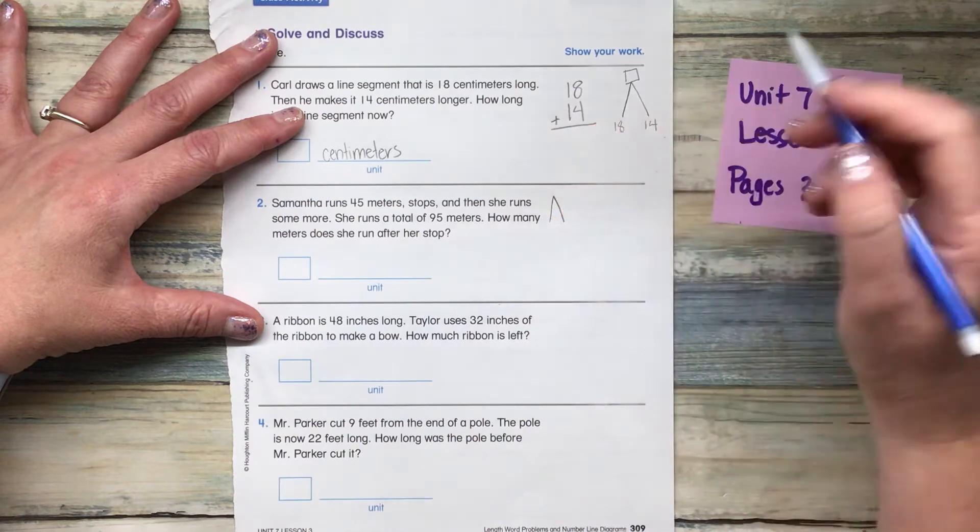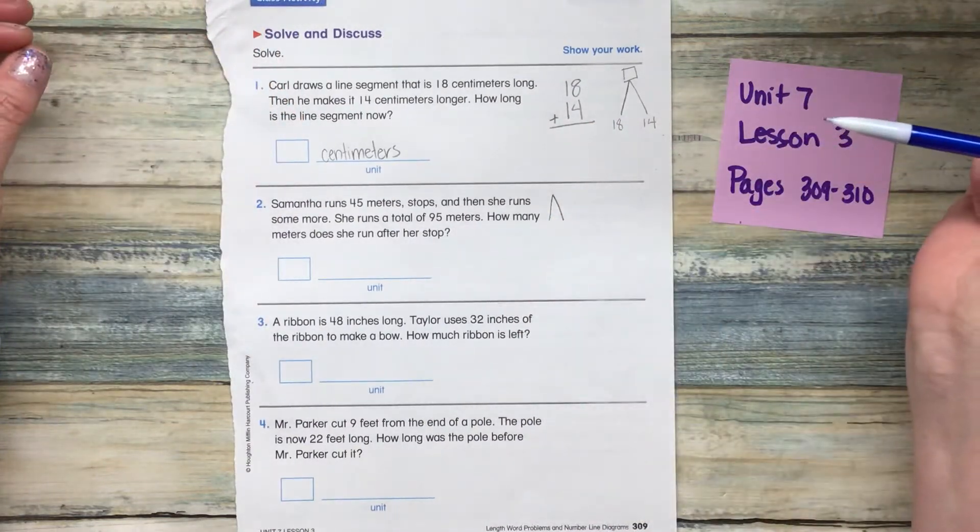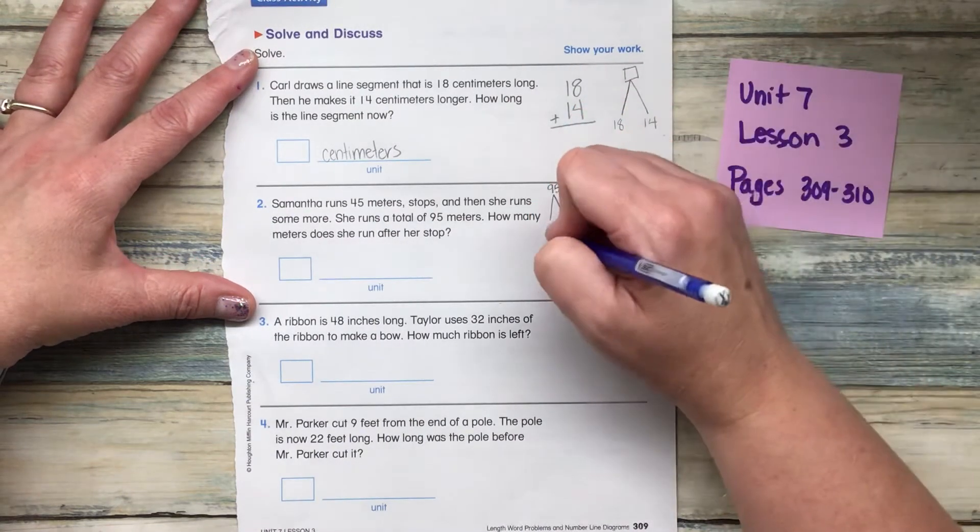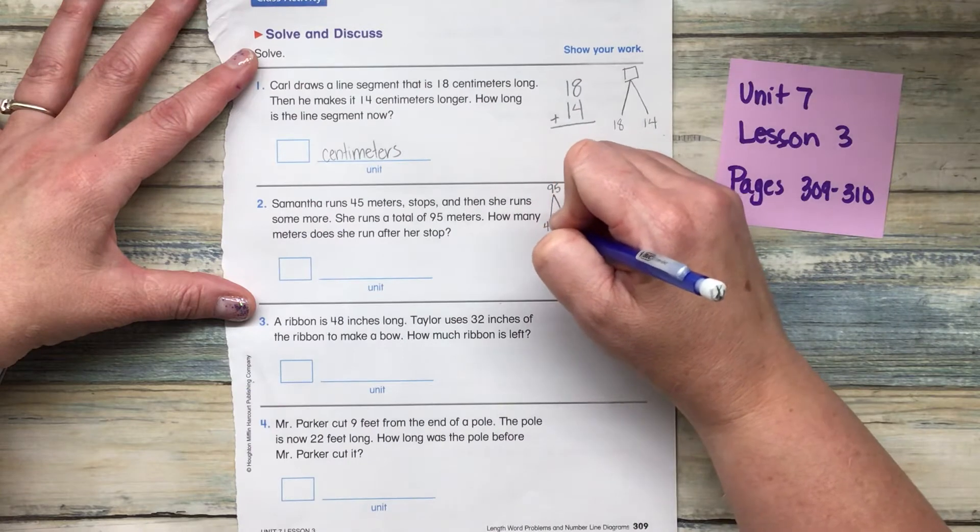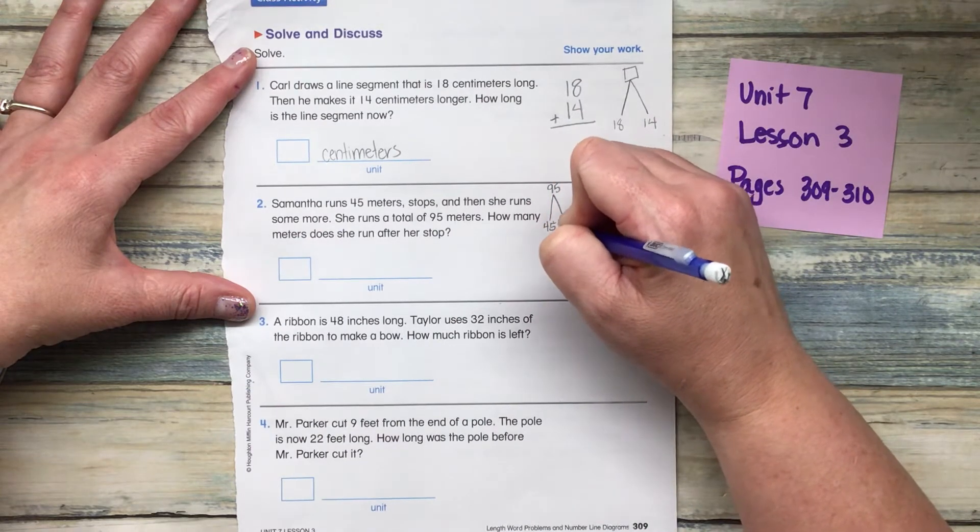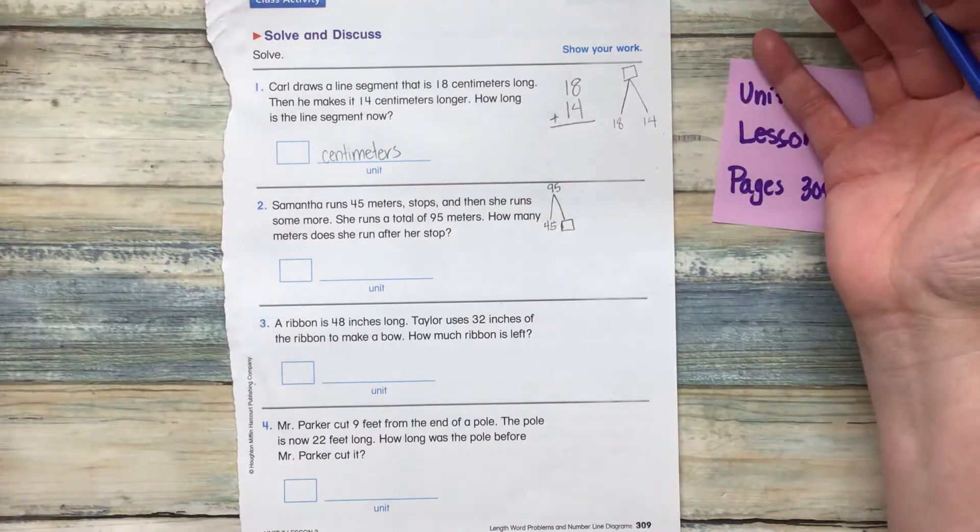So if we make a math mountain, did they tell us the total? They sure did. The total is 95. We know that she ran 45. So we need to find that missing partner. Are we going to add or subtract?